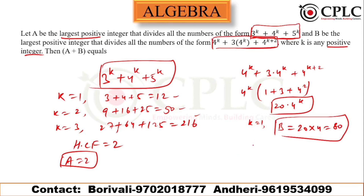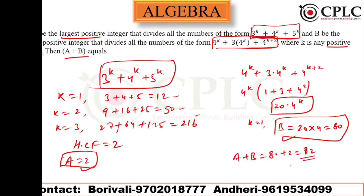So A + B = 2 + 80 = 82. This is the correct answer.